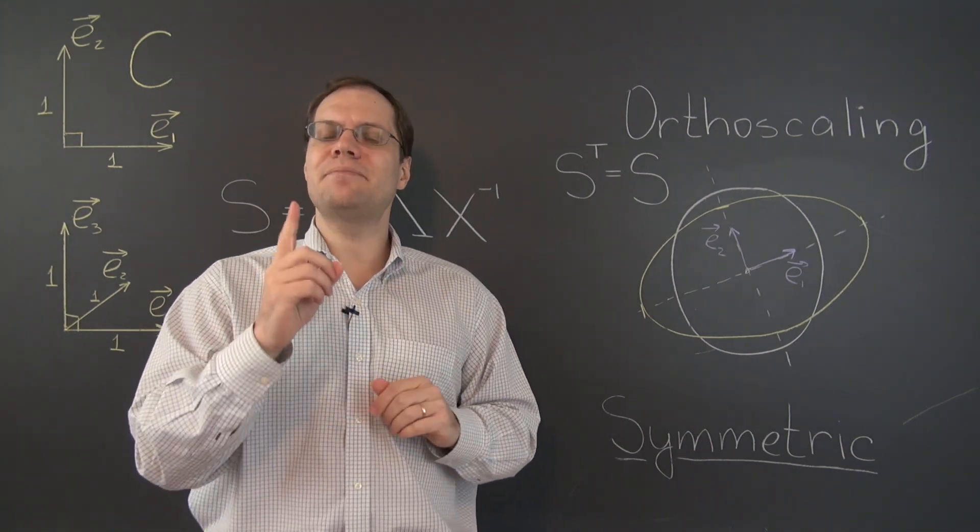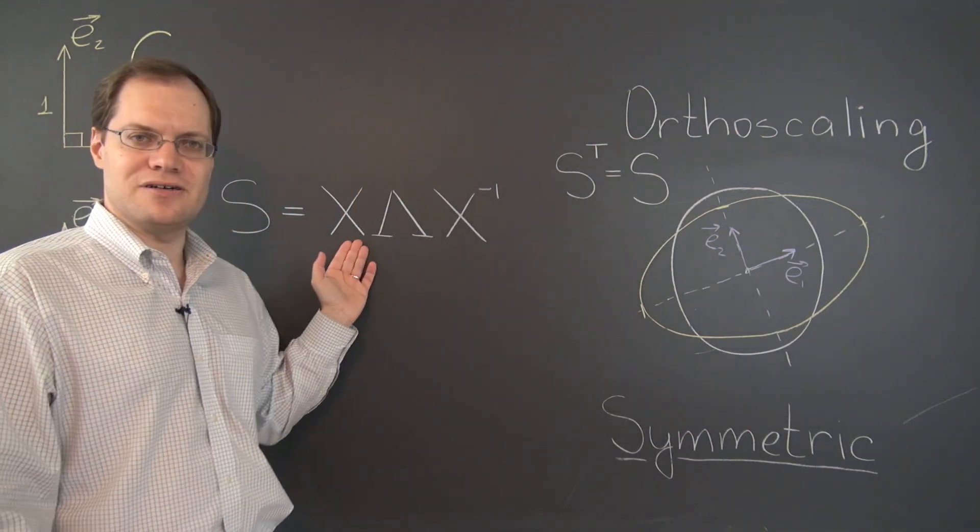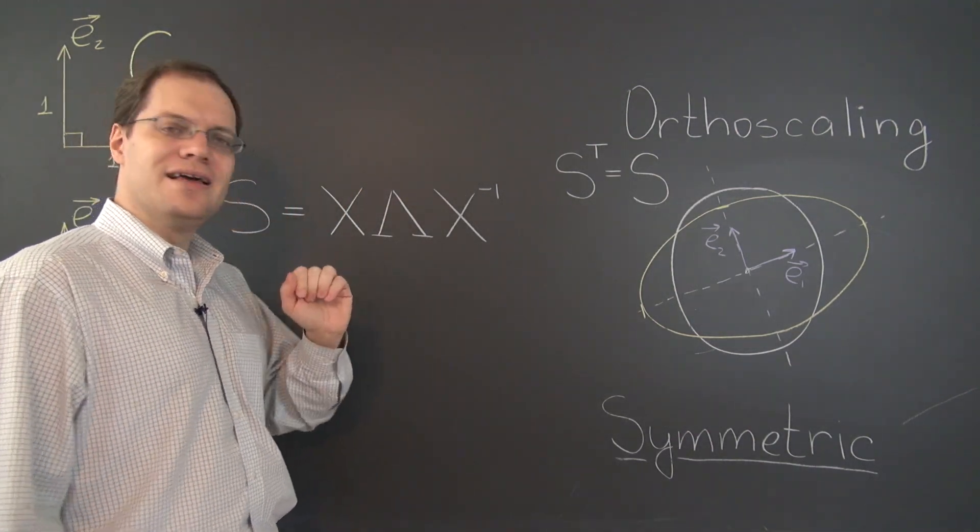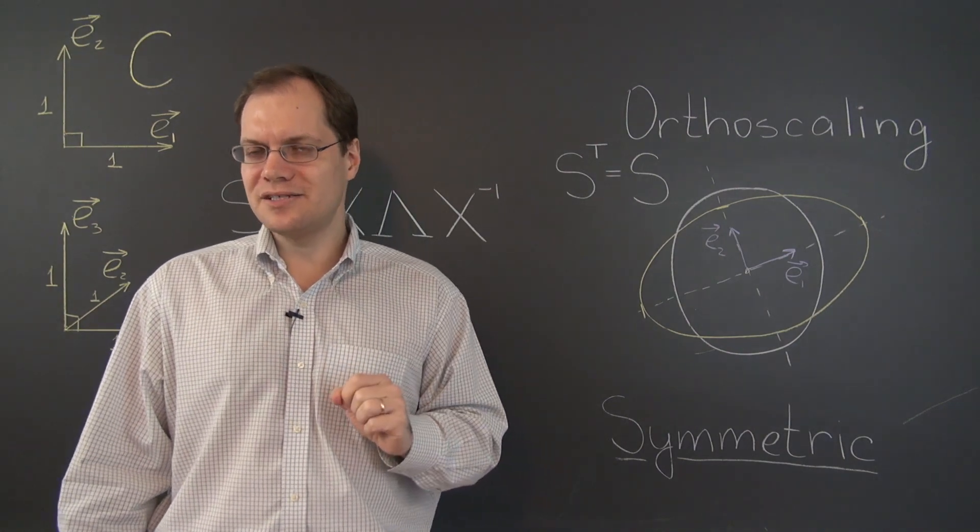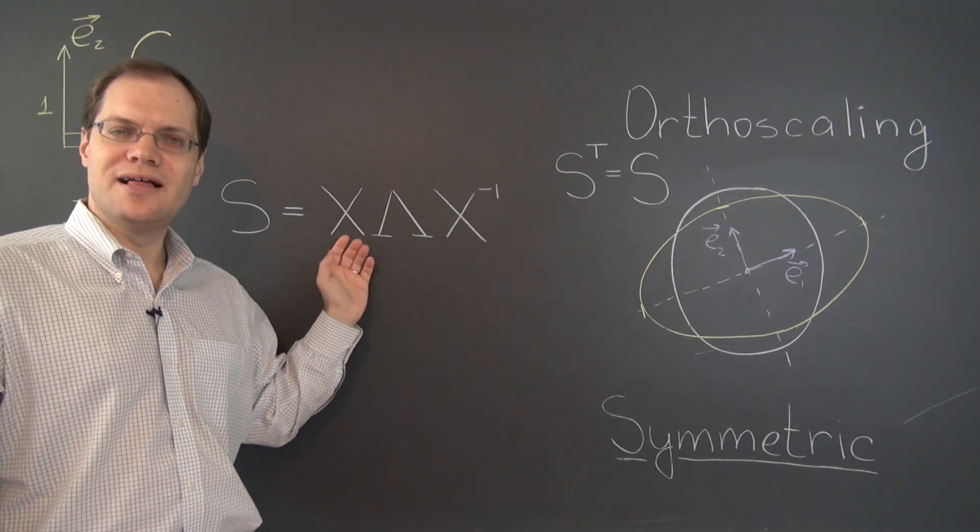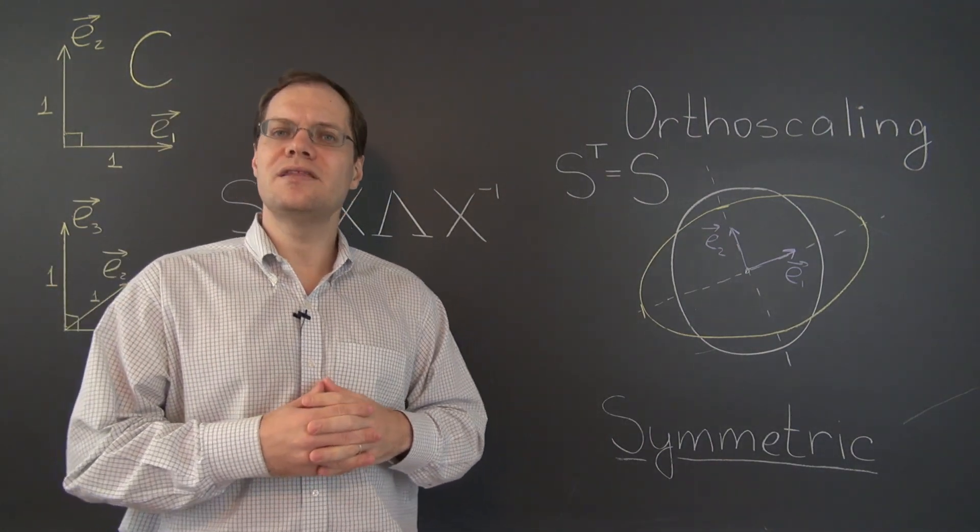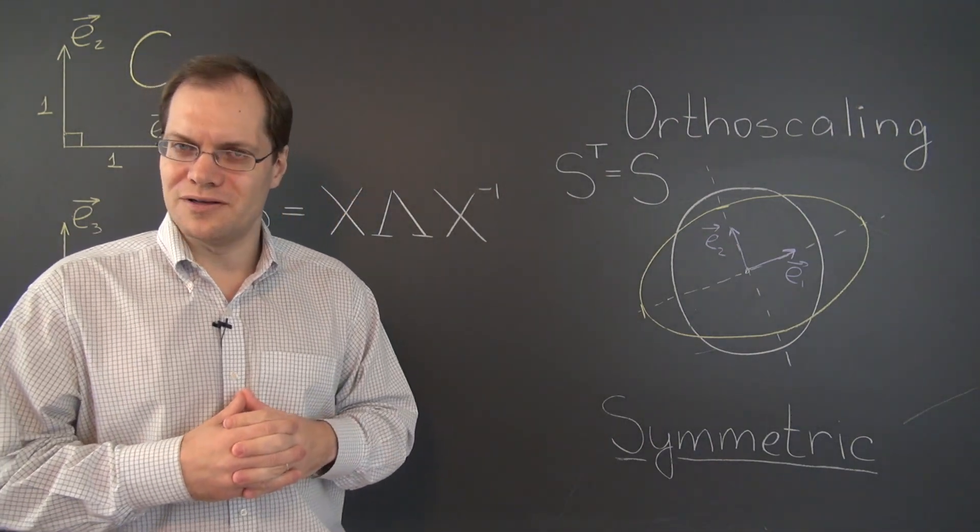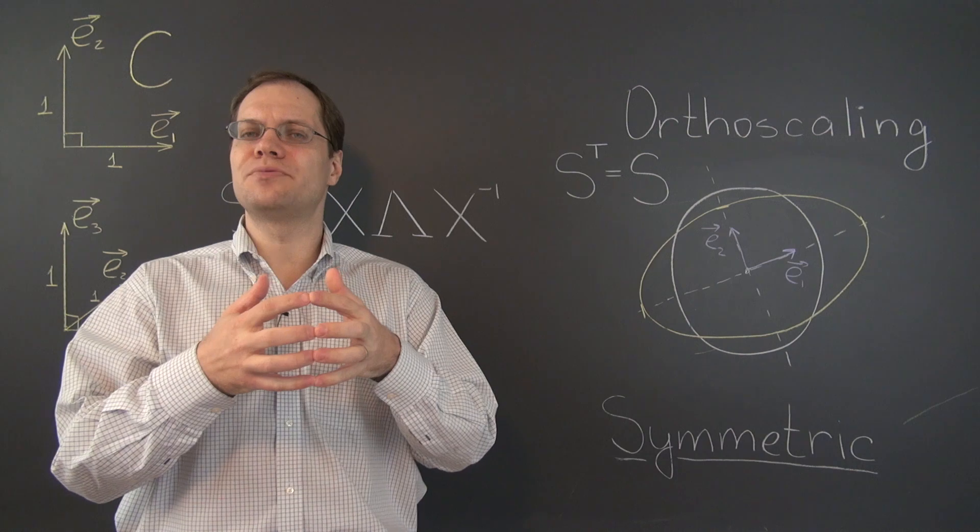Does that make the matrix X special? Well, if you recall our discussion, it doesn't quite make this matrix special. In order for this matrix to be special, its columns need to be orthonormal in the sense of the algebraic dot product.